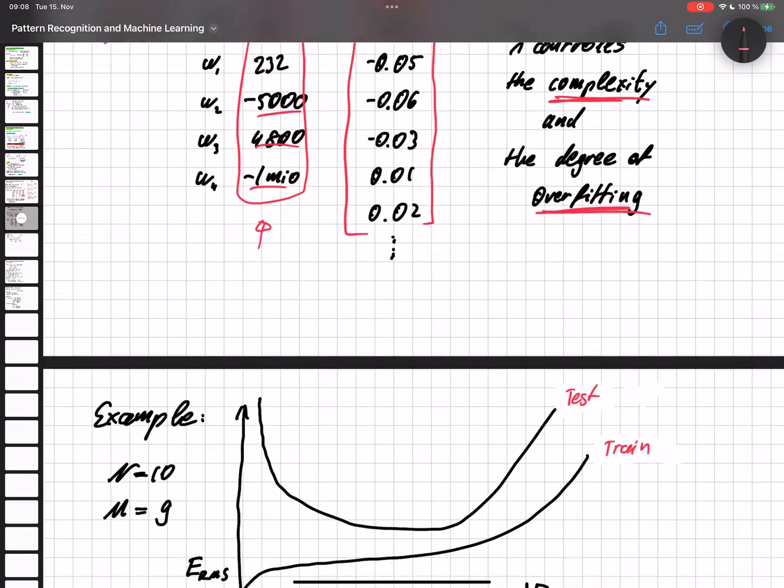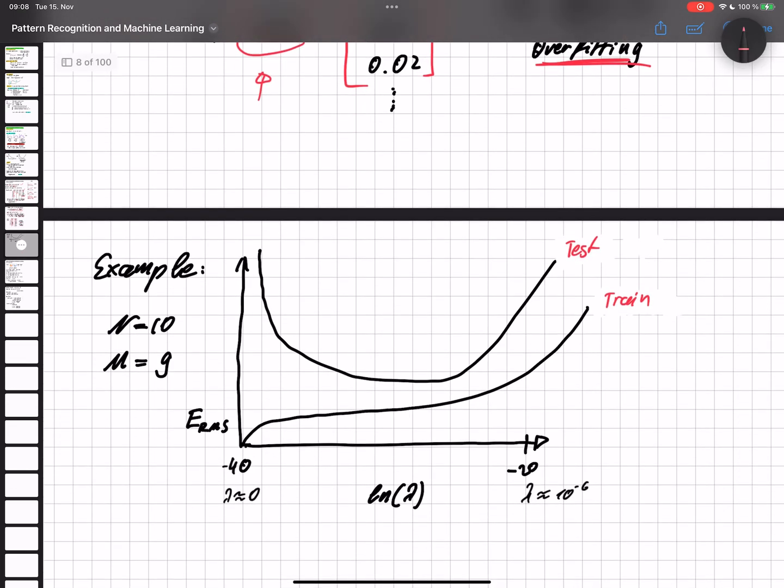So let's have a look at a visual example. Here again, we have our 10 data points and we choose a polynomial of degree 9. And we start with the training set. Here we have the scale on the ln of lambda, so we're here at minus 40, this is basically approximately zero.